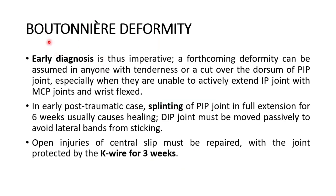Early diagnosis of the Boutonnière deformity is very important. A forthcoming deformity can be assumed in anyone with tenderness or a cut over the dorsum of the proximal interphalangeal joint, especially when they are unable to actively extend the interphalangeal joint with metacarpophalangeal joints and wrist flexed. In early post-traumatic cases, splinting of the PIP joint in full extension for six weeks usually causes healing. The distal interphalangeal joint must be moved passively to avoid the lateral bands from sticking.